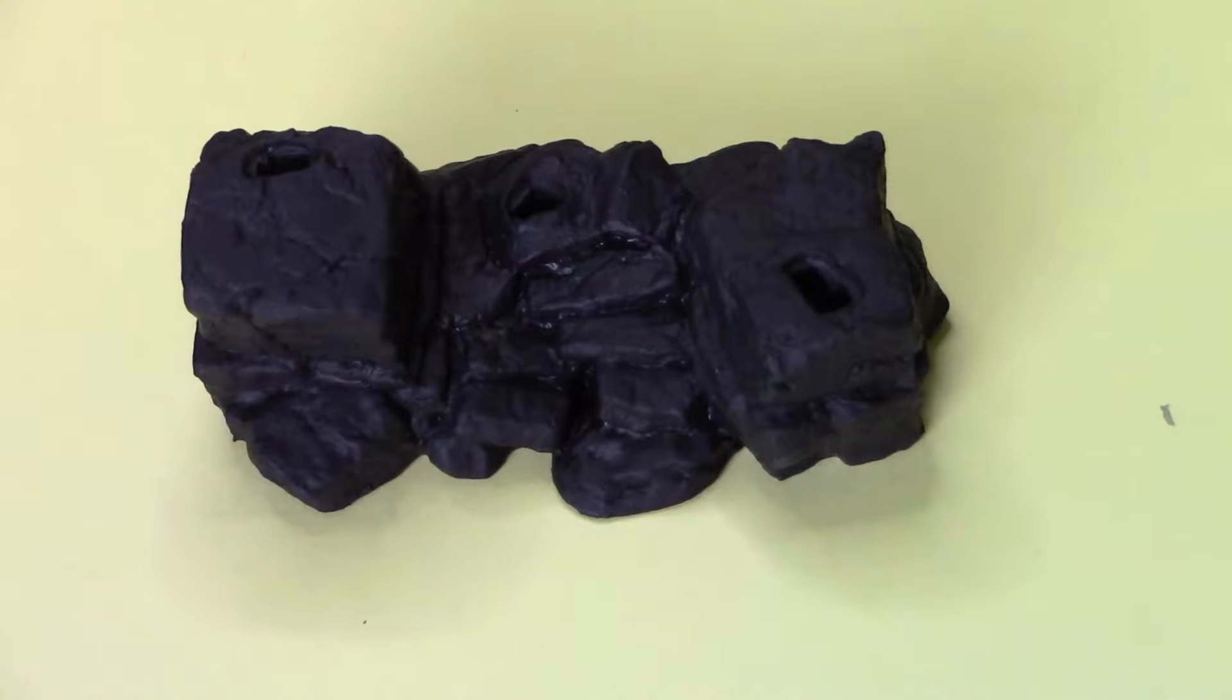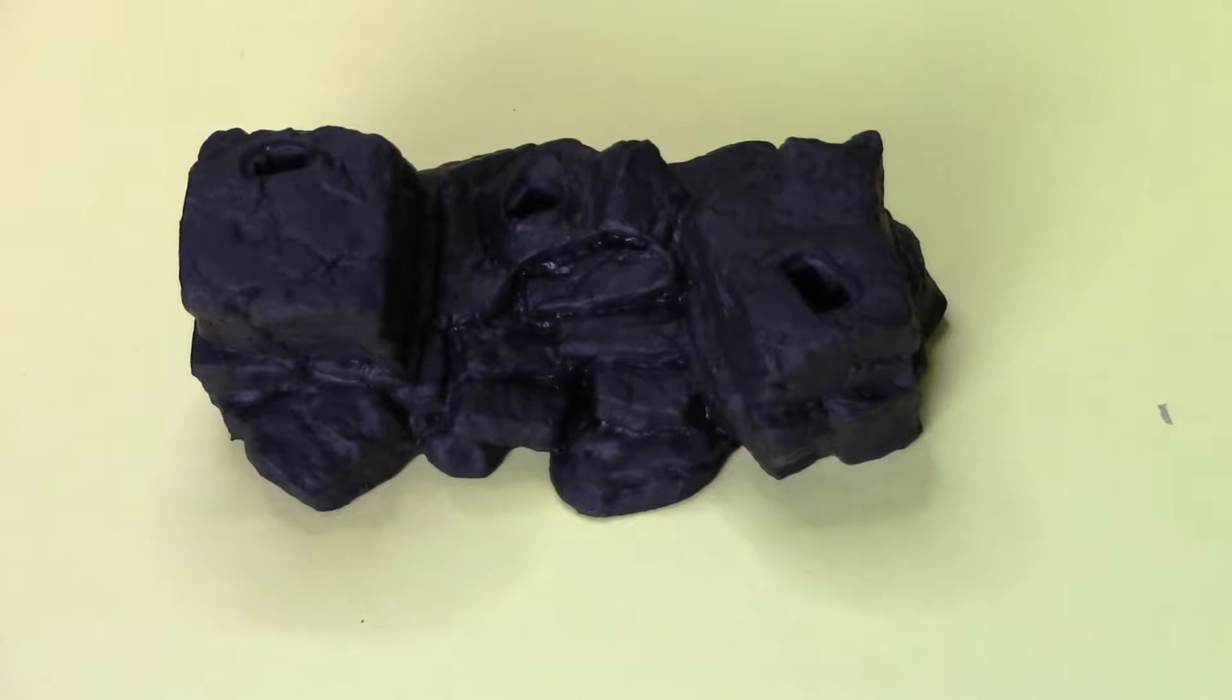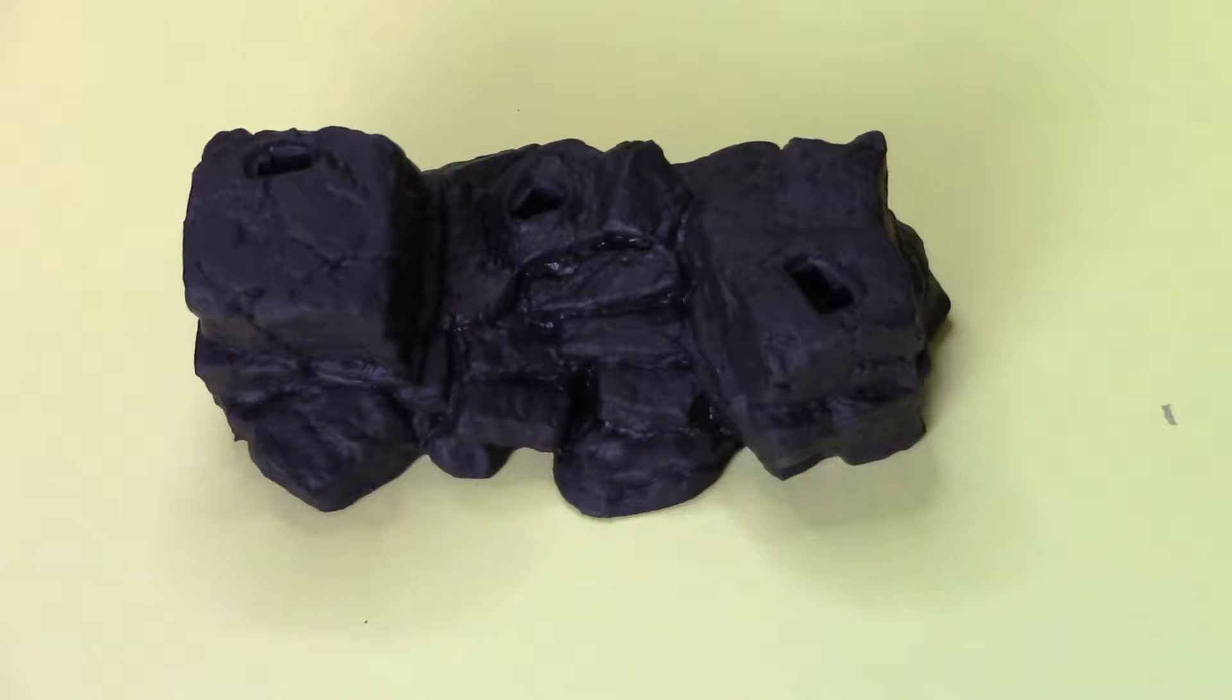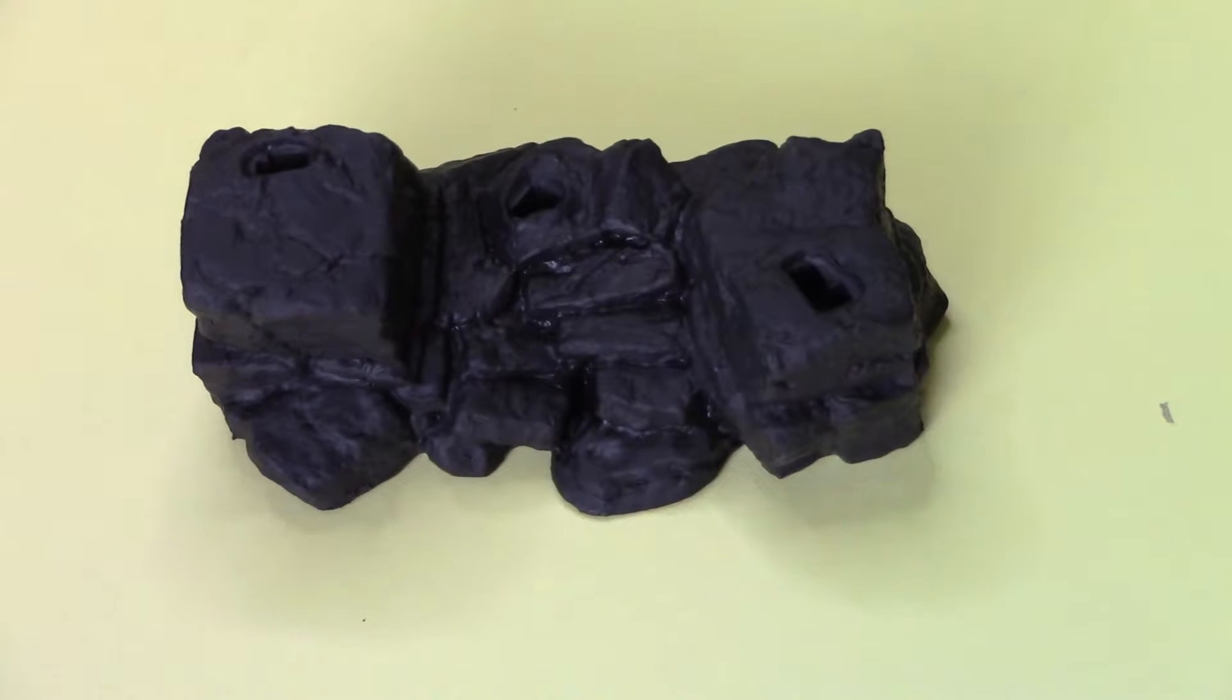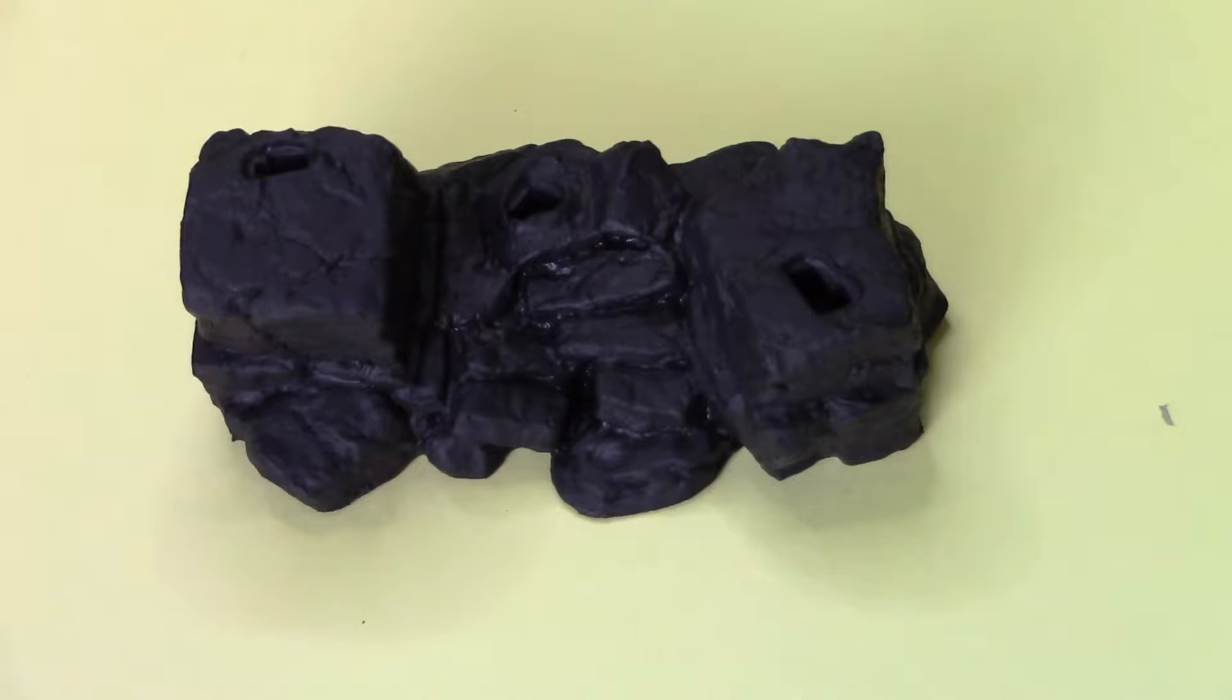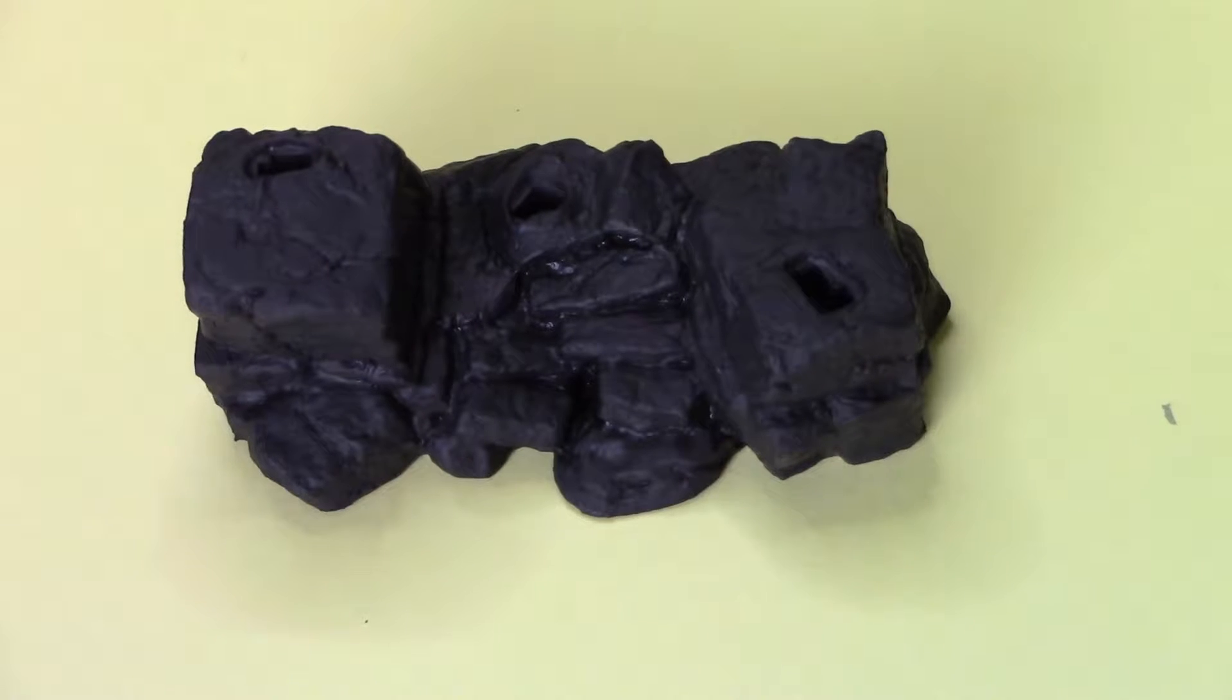Once your black paint is dry you're gonna want to lay down the gray color. So what I like to do for this step is to do a heavy-handed dry brush method. I'm not gonna work to get into every nook and cranny like I did with the black. I'm gonna hit the highest surface points but I'm gonna do it heavier than a normal dry brush. I don't know if it really counts as dry brushing.